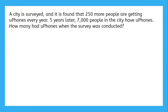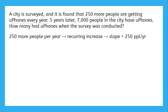First up: a city is surveyed and it is found that 250 more people are getting uPhones every year. Five years later, seven thousand people in the city have uPhones. How many had uPhones when the survey was conducted? To solve this, we need to identify the information we have. If 250 more people get uPhones every year, that's a recurring increase — so 250 people per year is a slope.